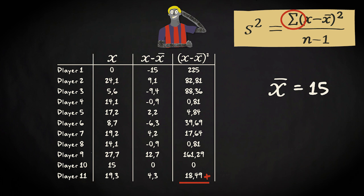What we now have is the sum of the square deviations, or, in other words, the sum of squares, which equals 639.74. We have to divide the sum of squares by n minus 1. The n in our case is 11, so n minus 1 is 10.